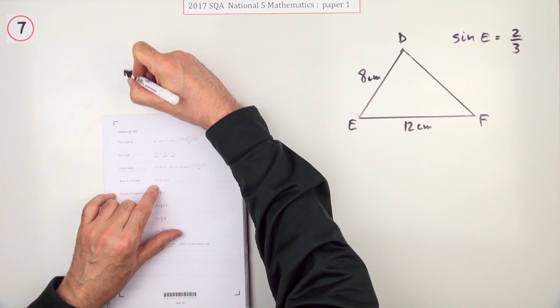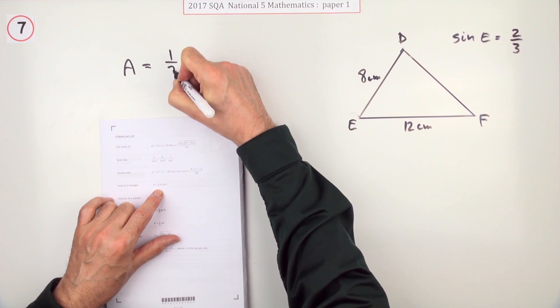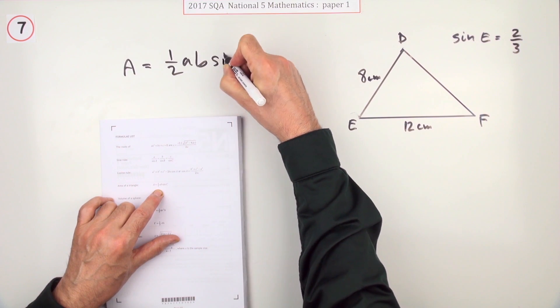So right, that's me. I'll just write that down. Area of a triangle is a half A, B, sin C.